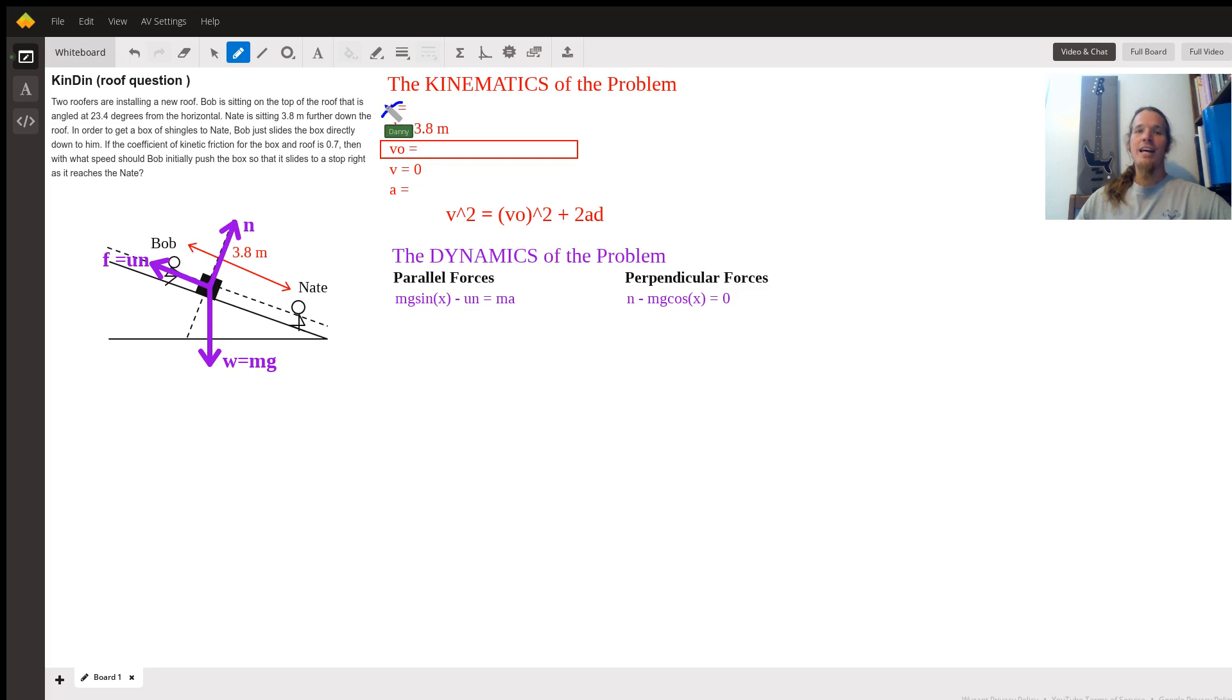Now we don't need the time in this problem. That's going to be a non-factor. And therefore there is a kinematics equation that does not involve time at all. And so that's the one that we will use to solve this problem. V squared equals V not squared plus 2 times A times D.